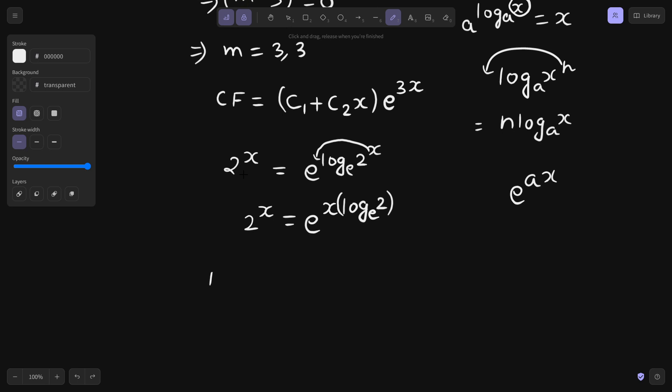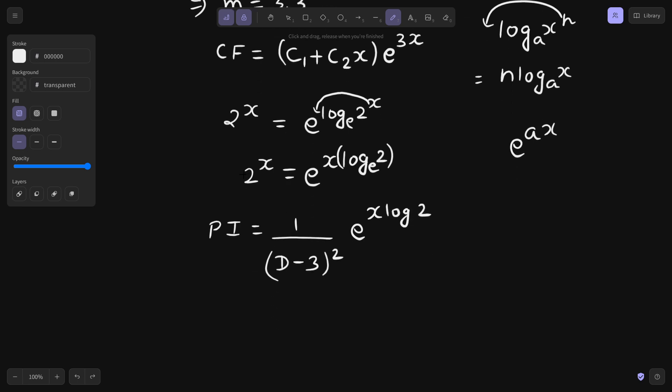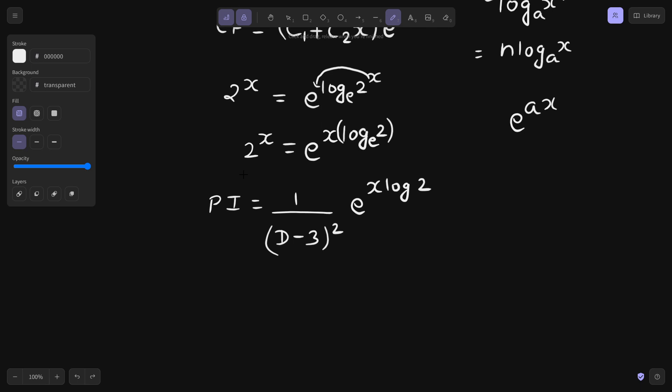Let us find the particular integral which is 1 upon f of d. f of d I can write as d minus 3 whole square. Writing this or writing d square minus 6d plus 9 is the same thing, and I have e power x log 2. Again, how to find the particular integral for e power x? Just replace d by a, so a here is log 2.